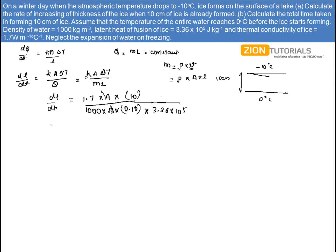On solving this equation, I get the value of dL by dt as 5 into 10 to the power minus 7 meter per second. That is the answer for the fourth part. In second part, I have to calculate the time taken in forming 10 cm of ice.